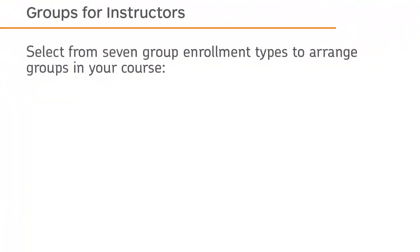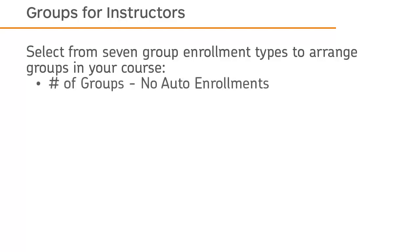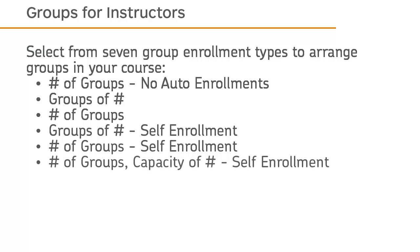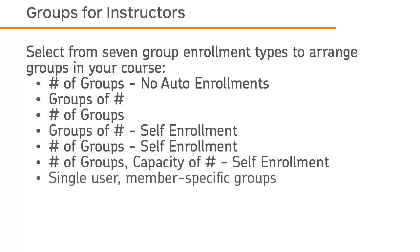Select from seven group enrollment types to arrange groups in your course: Number of Groups (no auto-enrollment), Groups of Number, Number of Groups, Groups of Number Self-Enrollment, Number of Groups Self-Enrollment, Number of Groups Capacity of Number Self-Enrollment, or Single User, Member-Specific Groups.